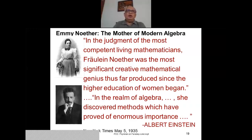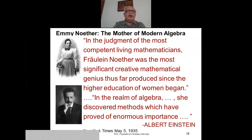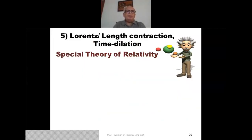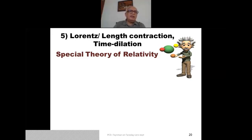Albert Einstein himself wrote about Noether: in the judgment of most competent living mathematicians, Fräulein Noether was the most significant creative mathematical genius thus far produced since higher education of women began. In the realm of algebra, she discovered methods which have proved of enormous importance. She is in fact often recognized as the mother of modern algebra, and this importance of symmetry was perhaps inspired by the symmetry in Maxwell's equations.